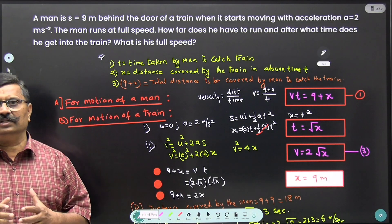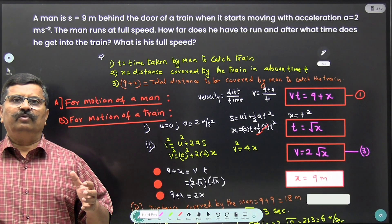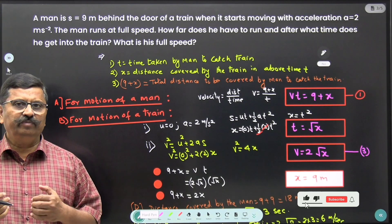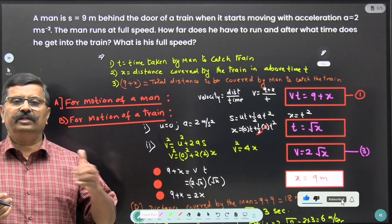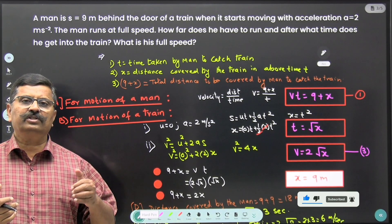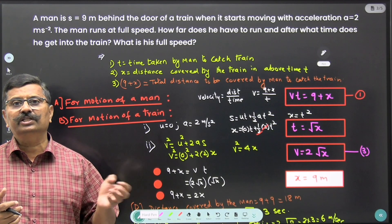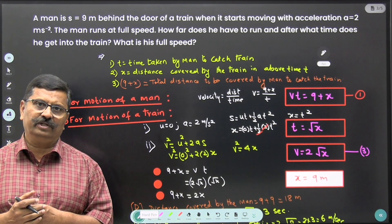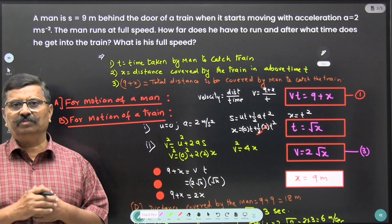See the situation is this, there is a man who is behind the train by 9 meter distance. The train is at rest. Now train starts moving with acceleration a is equal to 2 meter per second square. Now man has to catch up the train.